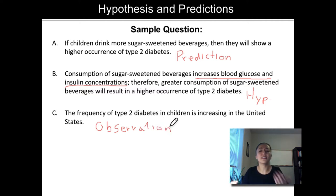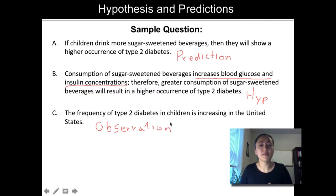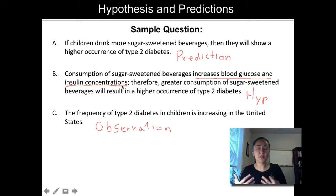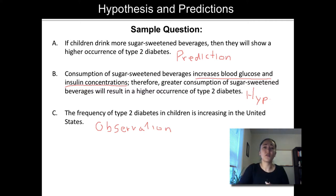You can see the differences here. Notice that for the hypothesis there was a clear causation stated. Anytime you get a problem like this, ask yourself: is it explaining why? Is it clearly stated in there why I expect to see what I'm going to see?